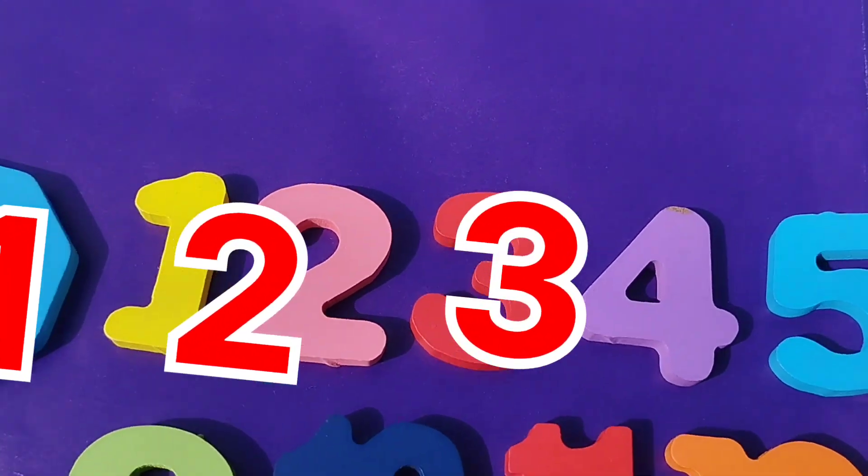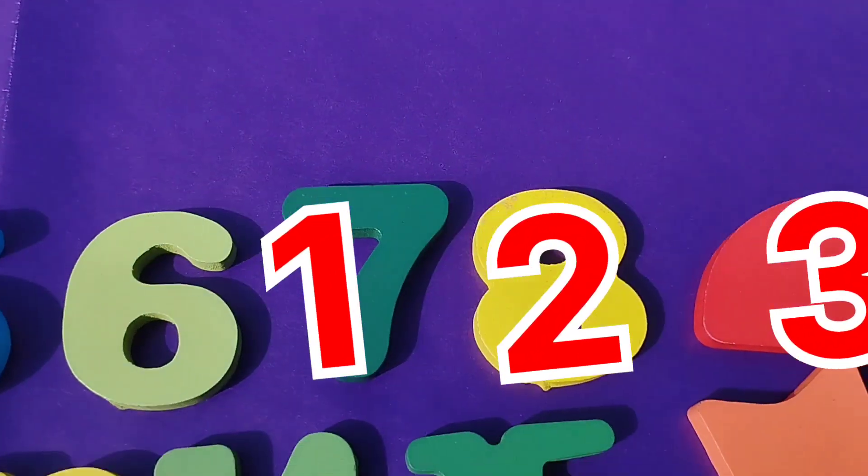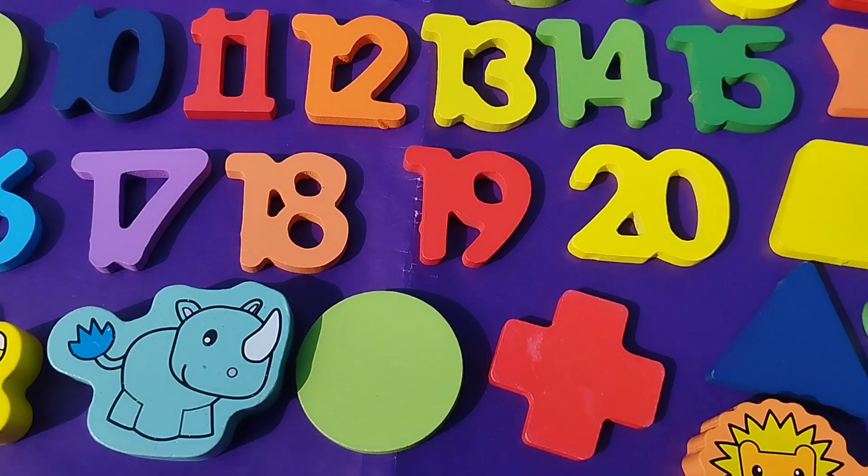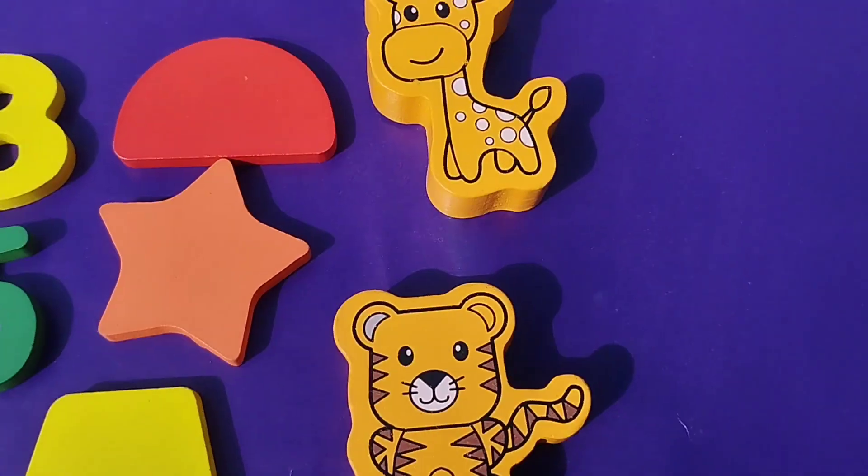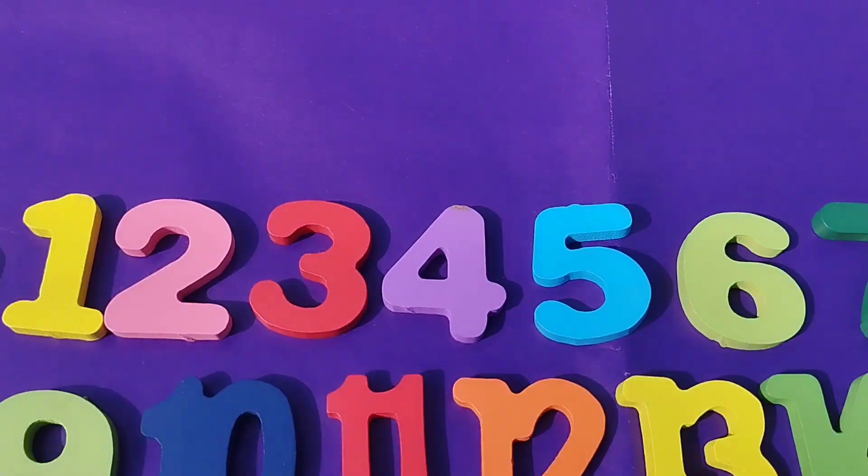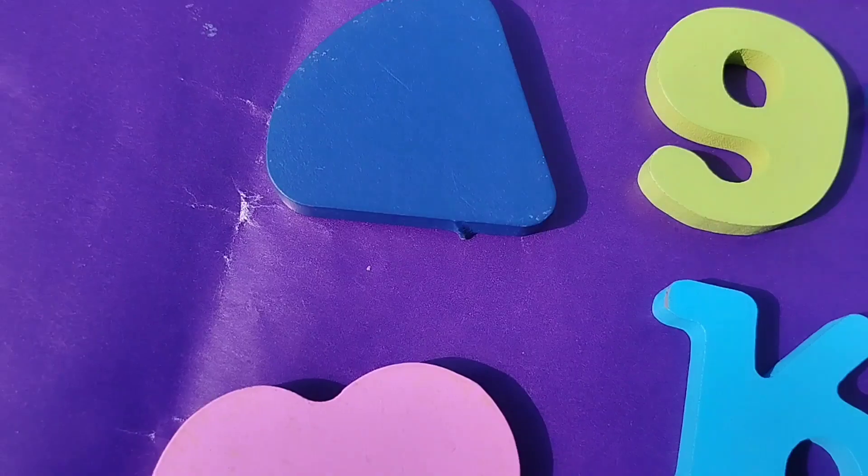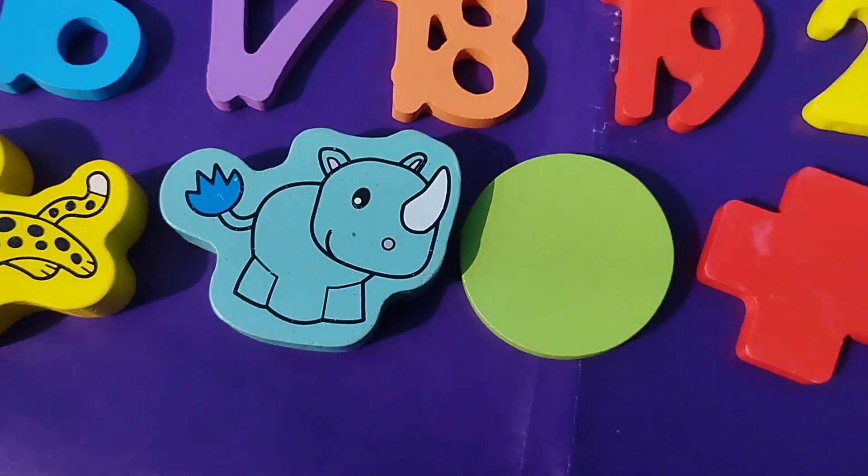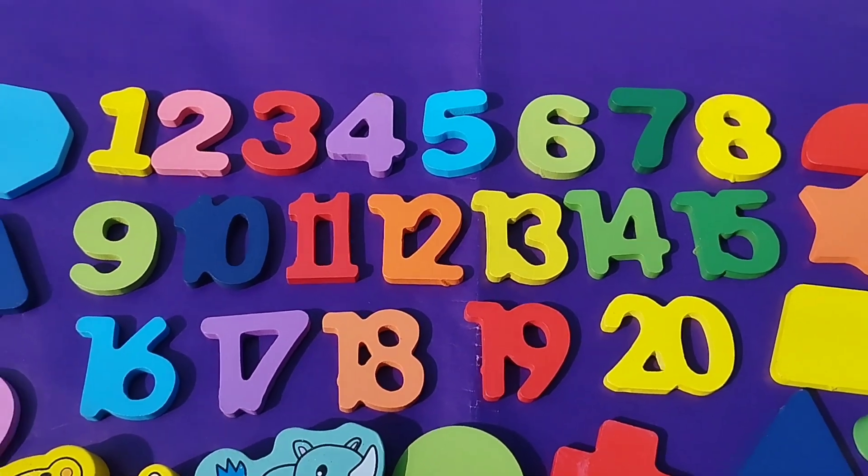Today we have a wooden number box, 1 to 20. We have wooden numbers, shapes and some wooden animals. Let's learn their names one by one. Are you ready? Let's start.